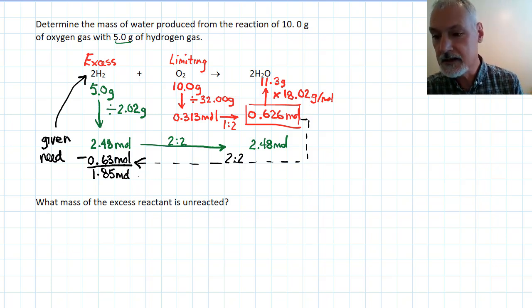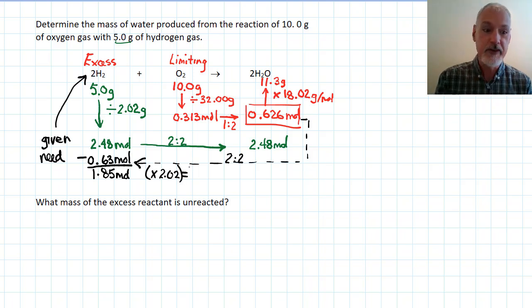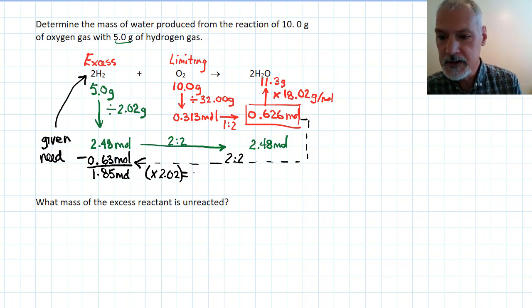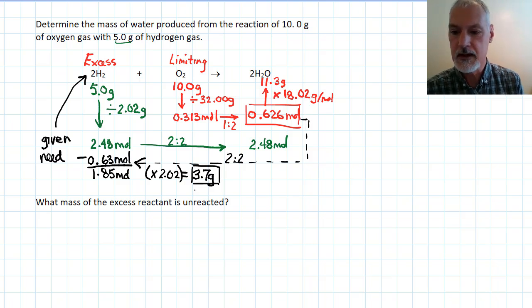If I want to take that and turn that information into grams, I would then have to take that and multiply it by the molar mass of hydrogen, 2.02. And that would give me the grams that would be left over, which would be 3.7 grams. So that's how much extra hydrogen I would have that would remain unreacted.